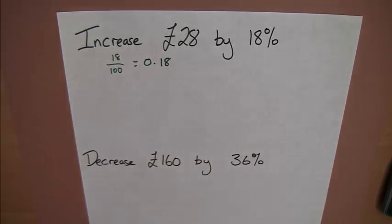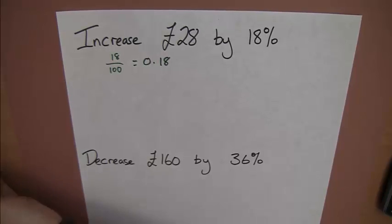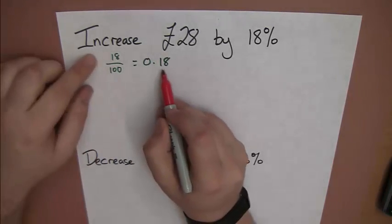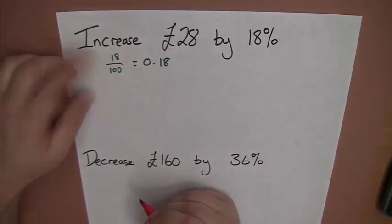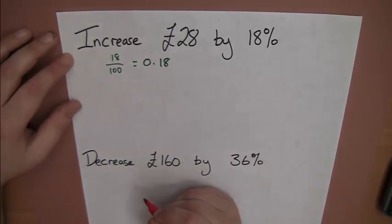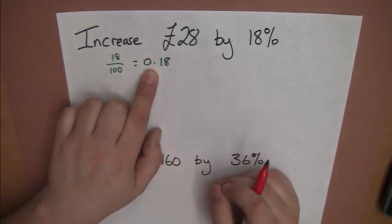Now, if you didn't know that, the easy spot is, well, 0.18, 18. It's just 0 point in front of the percentage. So, fairly easy to spot that. That is 18% as a decimal.